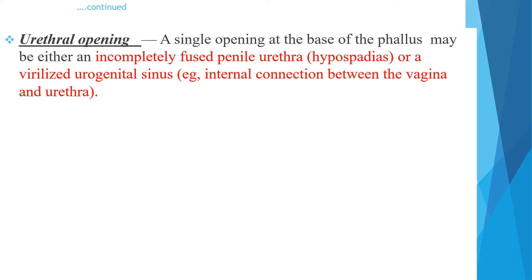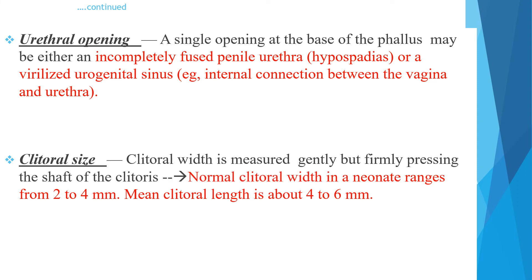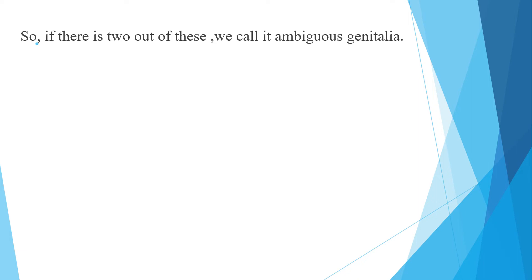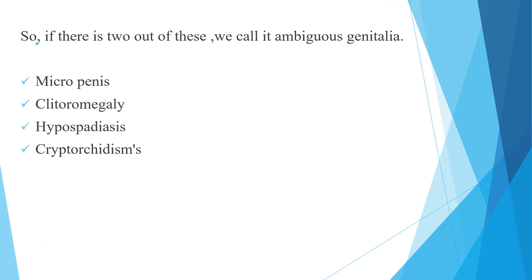Urethral openings should be identified; a single opening at the base of the phallus might be either an incompletely fused penile urethra, hypospadias, or a virilized urogenital sinus representing an internal connection between the vagina and uterus. Clitoral size should be documented — normal clitoral width in a neonate ranges from 2 to 4 mm and length is around 4 to 6 mm; greater than 6 mm is clitoromegaly. If 2 out of 4 features are present — micropenis, clitoromegaly, hypospadias, and cryptorchidism — we diagnose ambiguous genitalia and should work up accordingly.